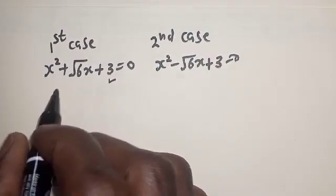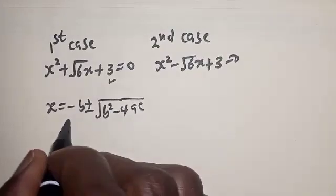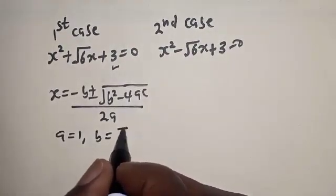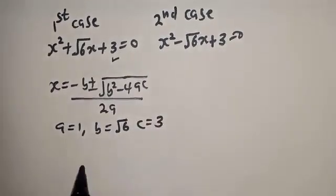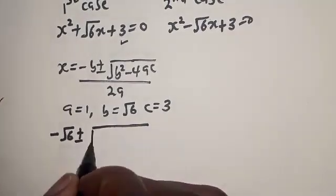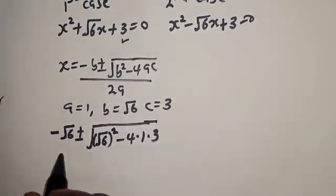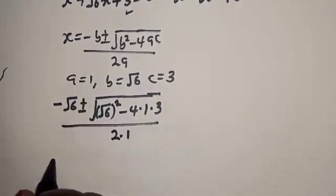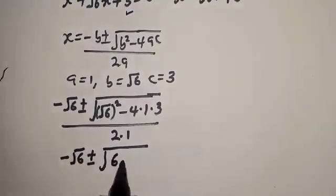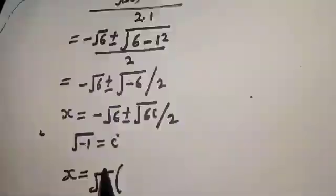Our quadratic formula is x = (−b ± √(b² − 4ac)) / 2a. From the first case, a = 1, b = √6, c = 3. Substituting: x = (−√6 ± √(( √6)² − 4·1·3)) / (2·1), which gives x = (−√6 ± √(6 − 12)) / 2, so x = (−√6 ± √(−6)) / 2.